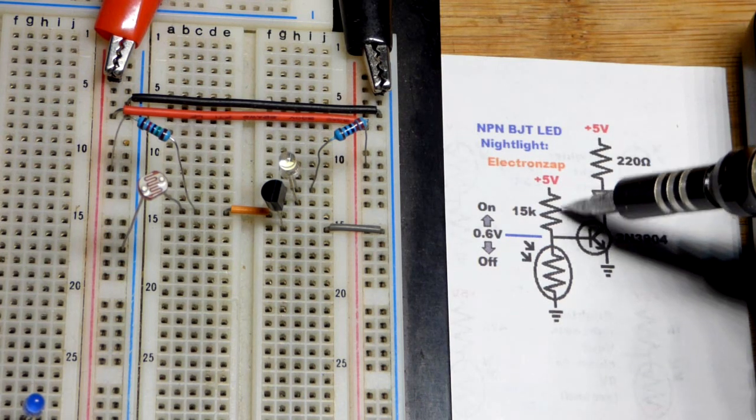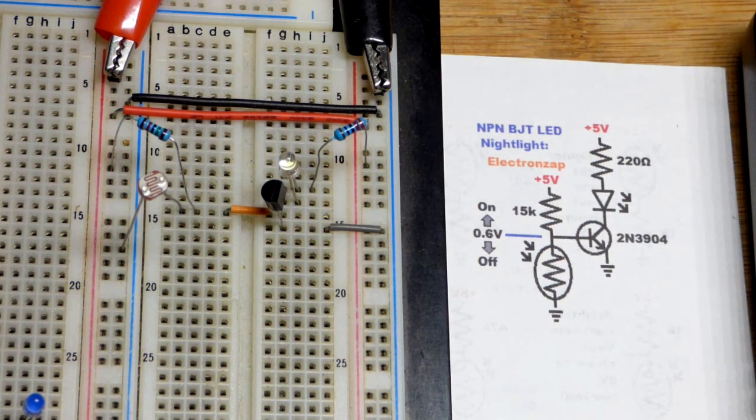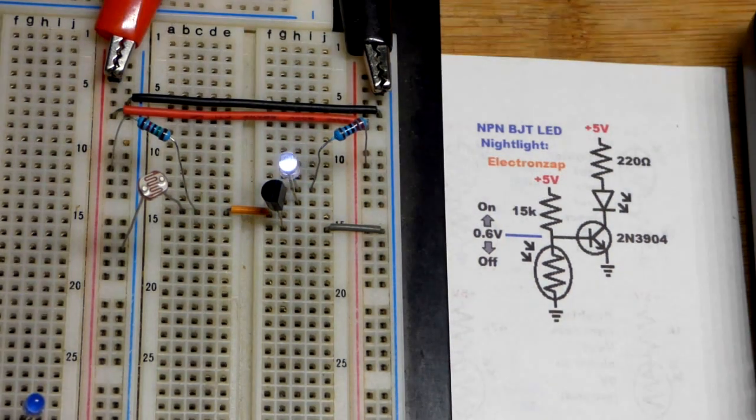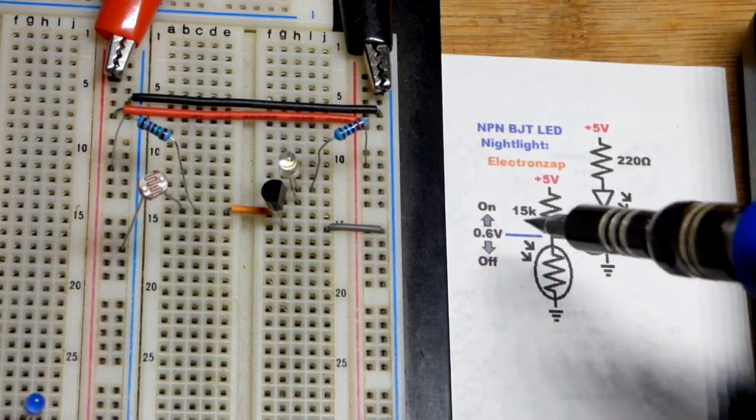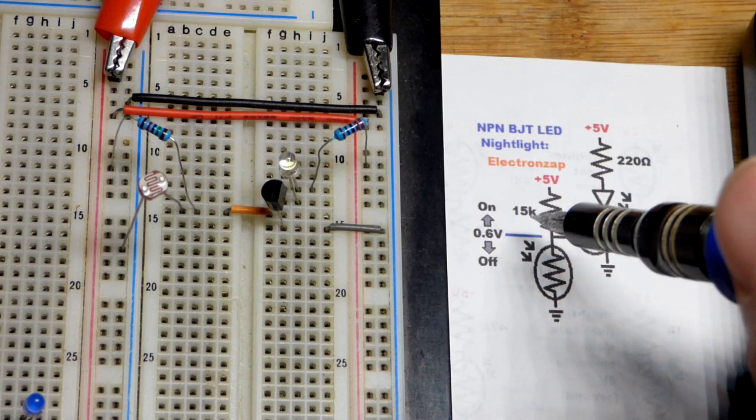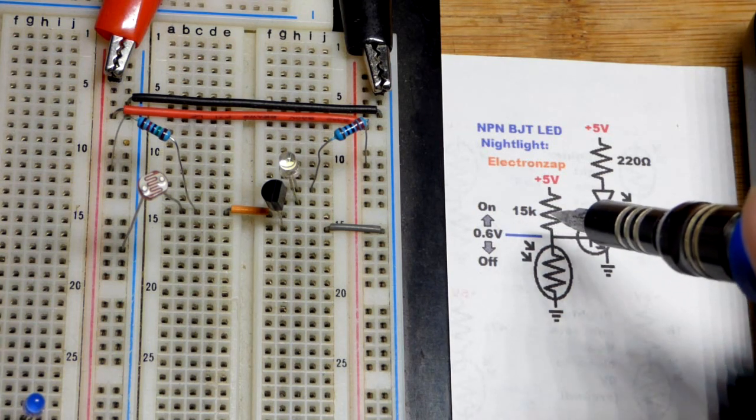So I just used different value resistors until I got the result that you see here. I think this worked out pretty well. My next lower value is at 10,000 ohms, and the next higher value that I got is 22,000 ohms.